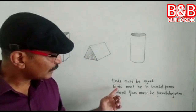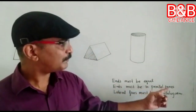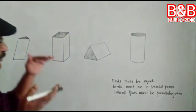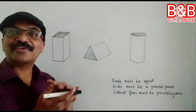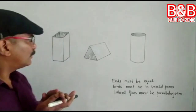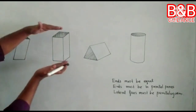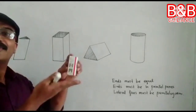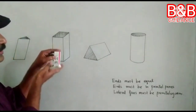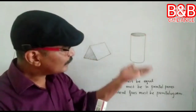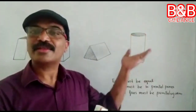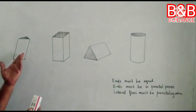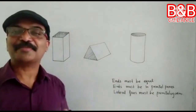Second condition: ends must be in parallel planes. I mean, end surfaces or end faces must be parallel. Here, this one will be parallel — just like this. Second condition is satisfied here. What about this? They are also satisfied — end surfaces or end faces are parallel in this case also. This one also: end faces are parallel.